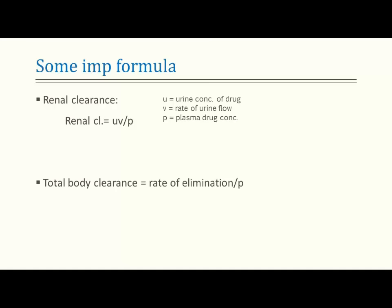Important clearance formulas: Renal clearance = U × V / P, where U is urine concentration, V is rate of urine flow, and P is plasma drug concentration. Total body clearance = rate of elimination / plasma drug concentration. Memorize these formulas as they are asked in various exams.